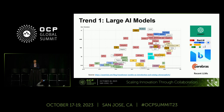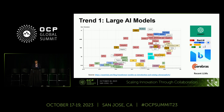The first trend is large AI models. We've come to the conclusion that adding more parameters is very beneficial for AI workloads. Specifically for generative AI, this chart plots the size of models as a function of the year, specifically for transformer models, which are really the building blocks for many of the LLMs driving applications like ChatGPT.